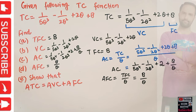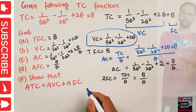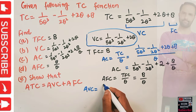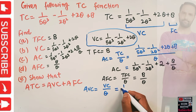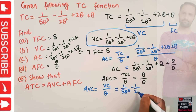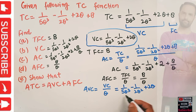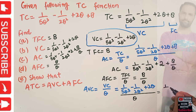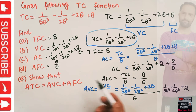The last part is to show that average total cost equals average variable cost plus average fixed cost. For that we need to calculate the average variable cost first. Average variable cost equals variable cost divided by output. Variable cost is 1/5 q³ − 1/2 q² + 2q, divided by q. So dividing each term by q: the first term becomes 1/5 q², the second term becomes 1/2 q, and the third term becomes 2.